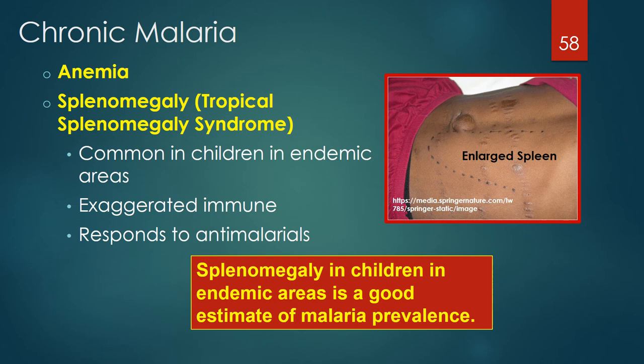Primaquine is also the only generally available anti-malarial that rapidly sterilizes mature Plasmodium falciparum gametocytes that are the infectious form for the mosquito. Chronic malaria is likely due to recurrent infections in endemic areas. Symptoms and signs include anemia and splenomegaly. Splenomegaly is common in children in endemic areas and is a good estimate of malaria prevalence. It is due to an exaggerated immune response and responds to anti-malarial therapy — commonly referred to as Tropical Splenomegaly Syndrome.